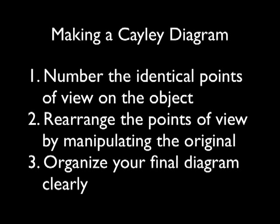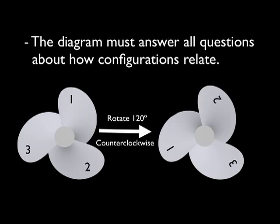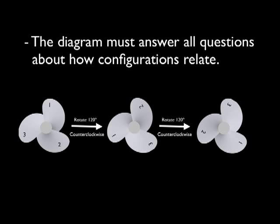And then there's one that goes with the third step in the process. What does it mean for the diagram to be a final diagram? How do you know you're done exploring and making this diagram? The diagram you end up with should answer all questions about how the configurations relate. For example, we started working with the propeller, and we got just this far. This diagram does not answer the question, what happens if I rotate again? We see what the 120 degree counterclockwise rotation does from the original configuration, but not where it goes from there. So, to answer that question, we had to expand our diagram.